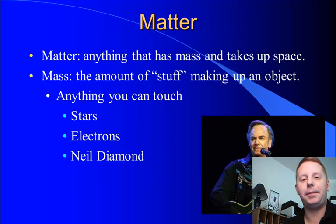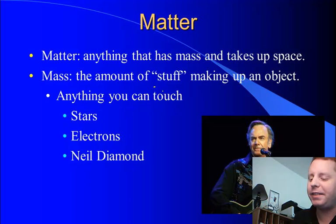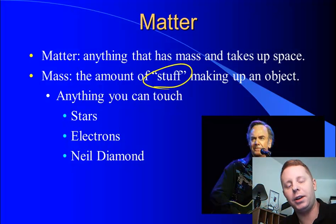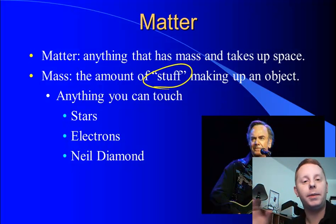So matter is anything that has mass and takes up space, but mass is the amount of stuff making up an object. So really, matter is anything you can touch or feel. A star is matter, electrons are matter, your cat Fluffy is matter, even Neil Diamond, you could touch him, he's matter.